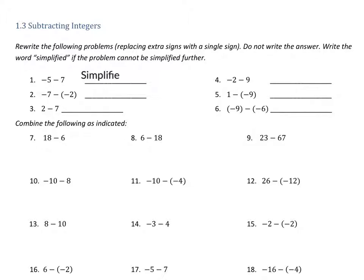Now let's look at problem 4. Let's do this one. Again, this one negative 2 minus 9, we can't really replace any extra signs with a single sign. That's what we're looking at right here. So negative 2 minus 9, this one we can't replace any of the signs, so this one also is simplified.